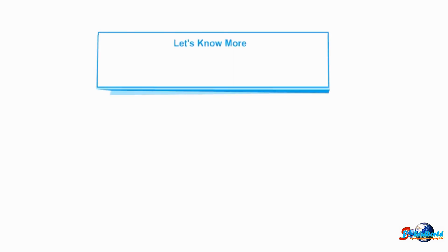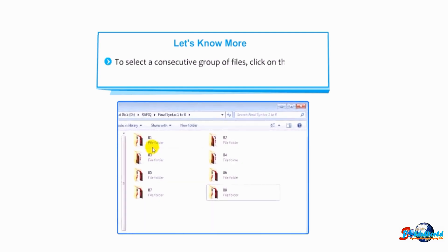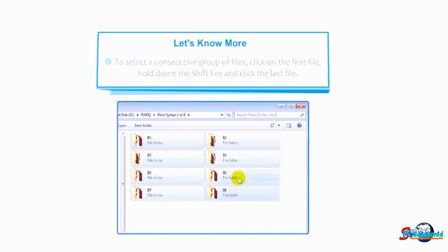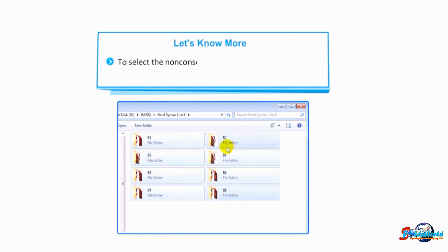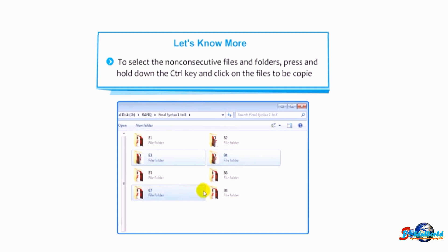To select a consecutive group of files, click on the first file, hold down the Shift key, and click the last file. To select non-consecutive files and folders, press and hold down the Control key and click on each file to be copied.